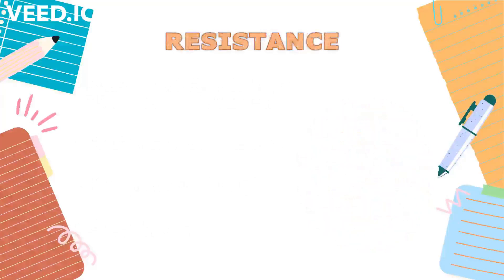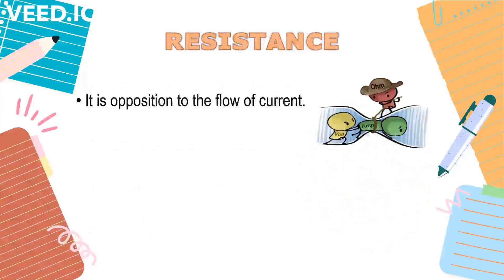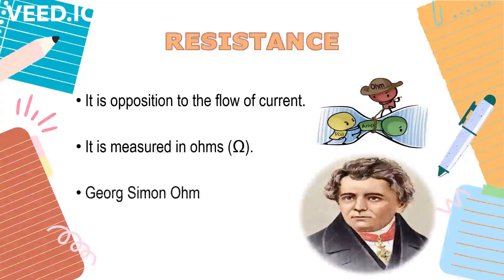Now let's proceed to resistance. Resistance is the opposition to the flow of current. It slows down or prevents current to flow. Greater resistance means smaller current flowing in a circuit. It is measured in ohm, named after the German physicist George Simon Ohm and represented with the Greek letter omega.